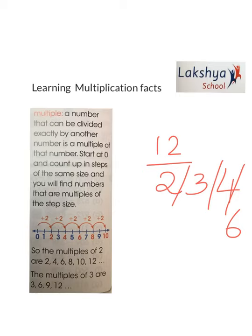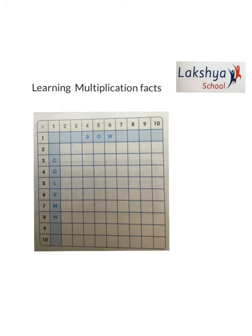Here we start at 0 and count in steps of plus 2, so we get all the numbers which are the multiples of 2. Similarly, when you start at 0 and count in steps of 3 — that is 0, 3, 6, 9, etc. — these are the multiples of 3. We can do the same for 4, 5, 6, or any number. These are called multiples.